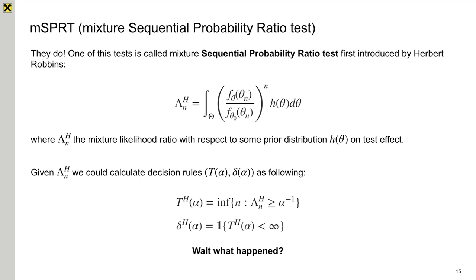One of these tests is called Mixture Sequential Probability Ratio test, first introduced by Herbert Robbins in 1975. He proposed a way to calculate a new statistics using a likelihood probability ratio test with some prior distribution on the test effect. Given this statistic, we could easily calculate our decision rules and after that decide to stop or not to stop the test.